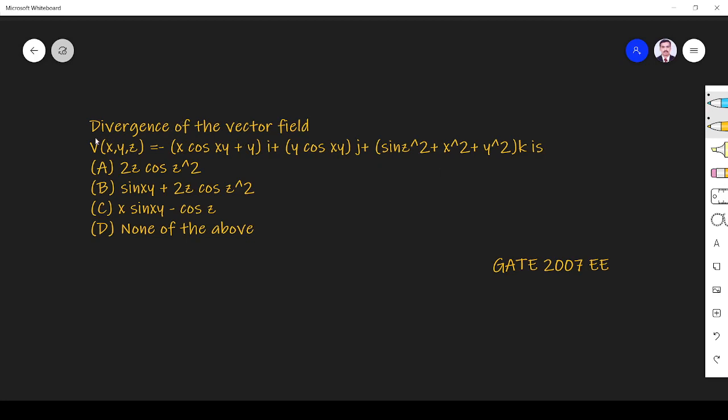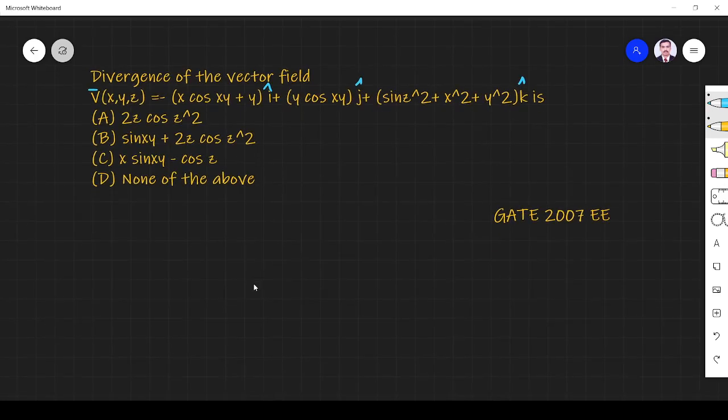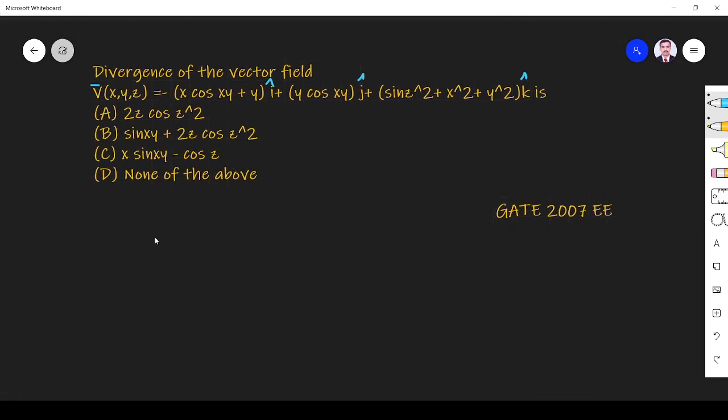The divergence of vector field V(x,y,z) is equal to... This is the vector they have given: x cos xy plus y i plus y cos xy j plus sin z squared plus x squared plus y squared k. They are given vector and they ask divergence.